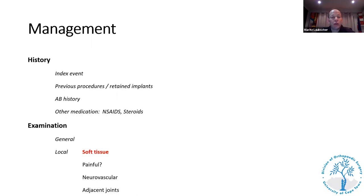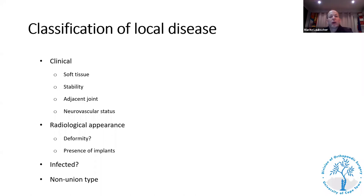Find out what medications the patient is on, specifically looking at those that could influence healing. On examination, look at the state of the soft tissues, whether the non-union is painful, perform a careful neurovascular examination, and assess the adjacent joints. Classify the local disease using clinical parameters, then look at the radiological appearance — whether it is atrophic, oligotrophic, or hypertrophic — the presence of deformity or surgical implants, and whether there is infection.